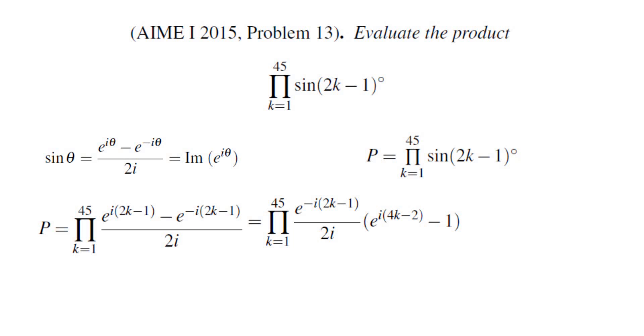Now if you look at the complex number e^(i(4k-2)), that complex number satisfies z^90 = -1 because e^(180i) equals -1. Remember that these are in degrees—every angle here is in degrees.